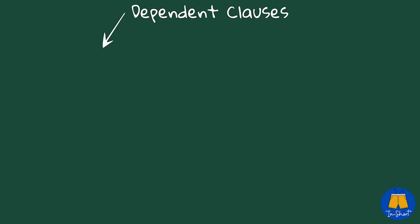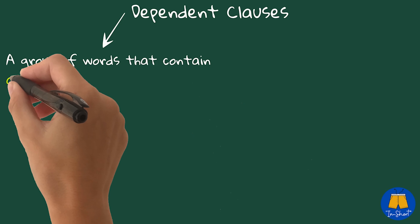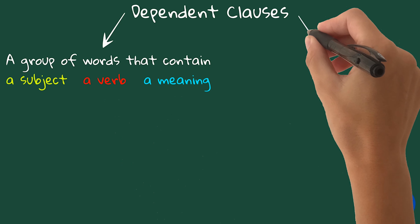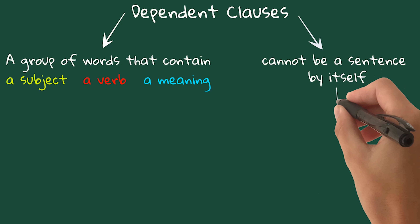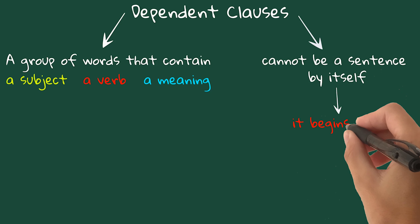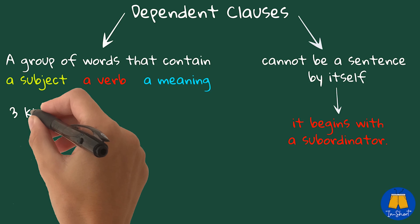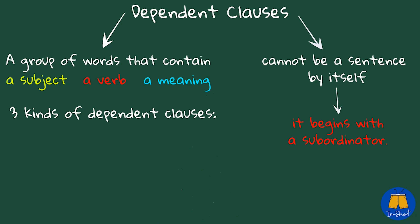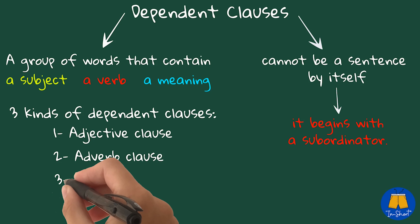A dependent clause is a group of words that contain a subject, a verb, and some meaning. However, it cannot be a sentence by itself, mainly because it begins with a subordinator. There are three kinds of dependent clauses: adjective clause, adverb clause, and noun clause.